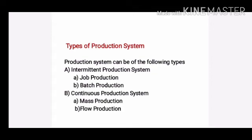The continuous production system includes flow production and mass production. In mass production, large quantities of goods are produced based on standard size, specifications, and qualities.